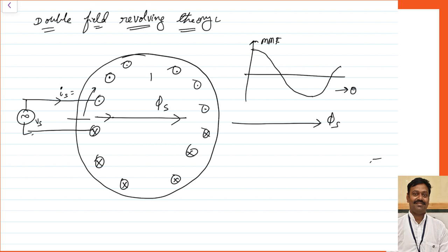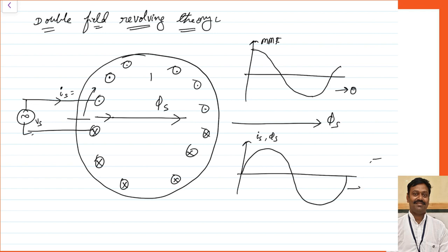With respect to time, because we know our supply is sinusoidal, the current Is varies sinusoidally. Because of this, the flux produced also varies in magnitude sinusoidally with respect to time.